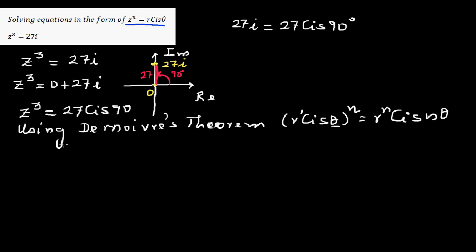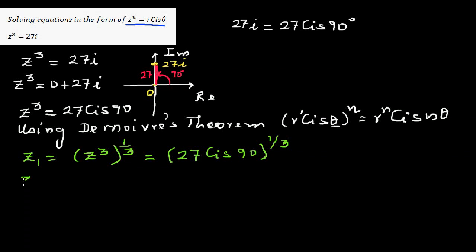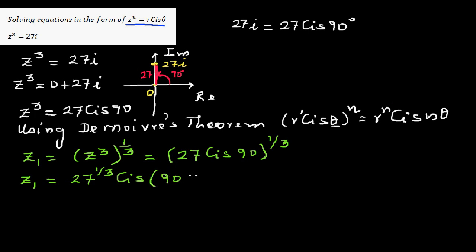To find Z1, the principal root, we raise both sides to the power of one third: Z1 equals 27 cis 90 raised to one third. Applying De Moivre's theorem, this is 27 raised to one third, which is 3, cis 90 times one third, which is 30. So Z1 is 3 cis 30.